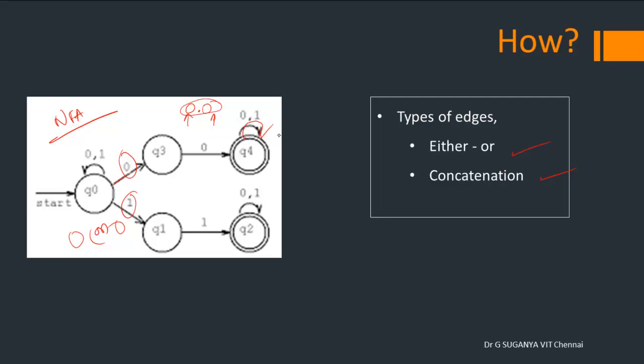we call it as the self loop. Right? So what is the purpose of self loop? It represents the fact of zero or more repetitions of a particular input symbol.